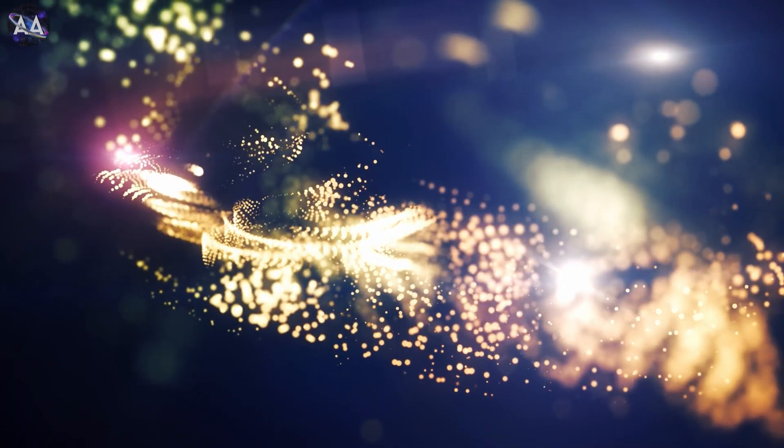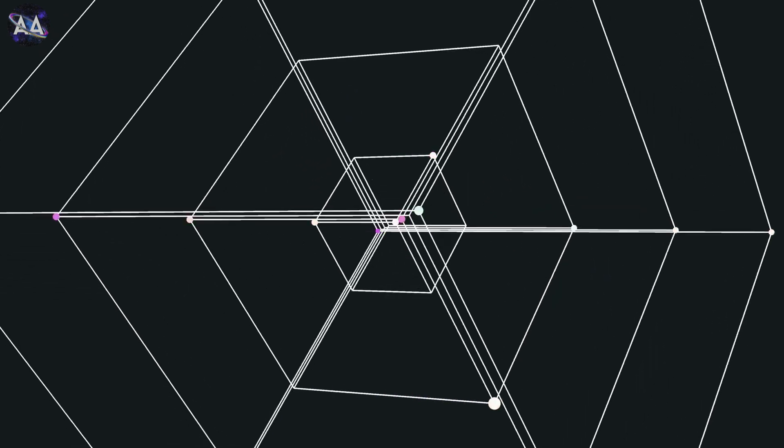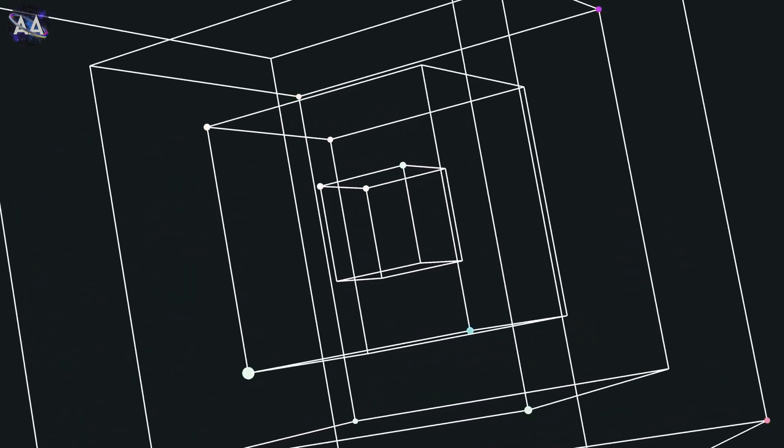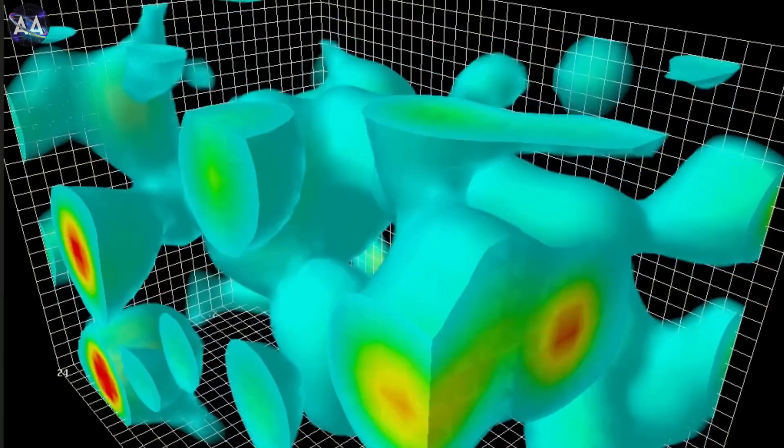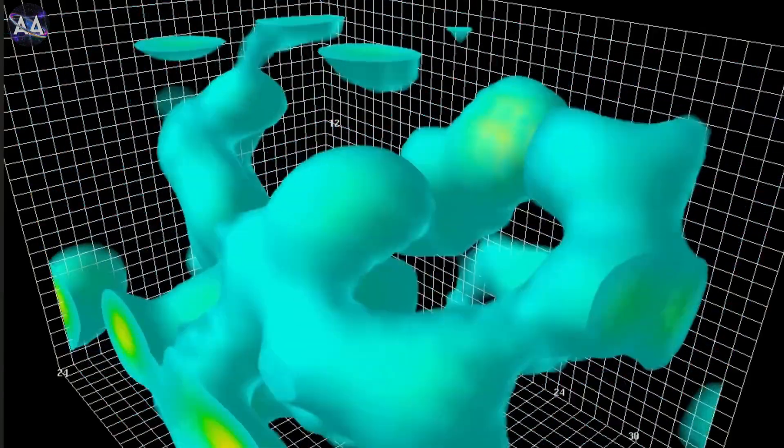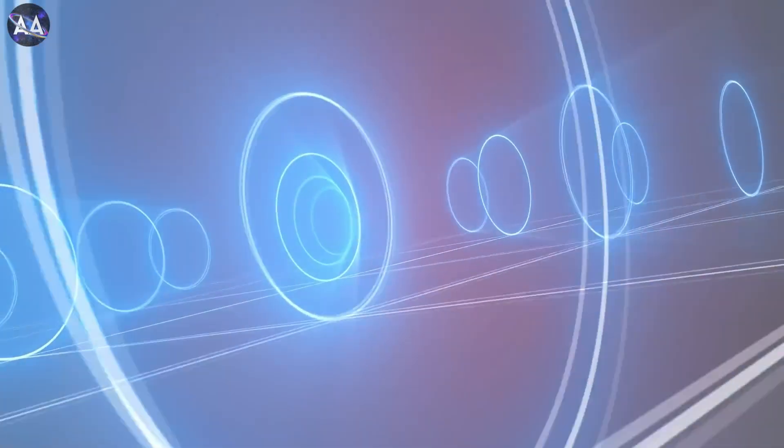Here's where things get really mind-bending. According to string theory, our universe isn't just the three dimensions of space – length, width, and height – plus time that we're familiar with. There are actually more dimensions, possibly as many as 10 or even 11.